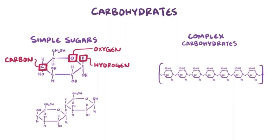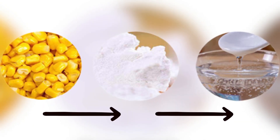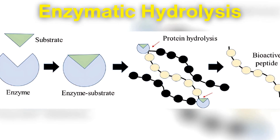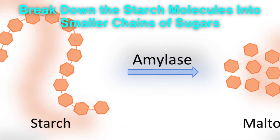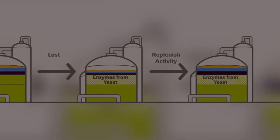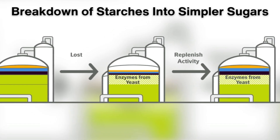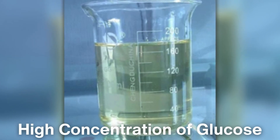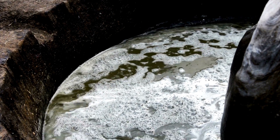The next phase involves breaking down the complex carbohydrates in the biomass into simple sugars. In the case of corn, the starch in the cornmeal must be broken down into glucose through a process known as enzymatic hydrolysis, where enzymes called amylases are added to the mixture. Amylases break down the starch molecules into smaller chains of sugars, which can later be fermented. Heat is often applied to facilitate this breakdown, a process referred to as saccharification. The result is a sugary slurry, or mash, containing a high concentration of glucose. If the feedstock is sugarcane, this step is unnecessary, as the juice already contains easily fermentable sugars.